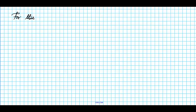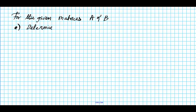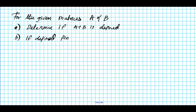The instructions for the examples are as follows: for given matrices A and B, first determine if A plus B is defined, and second, if the sum is defined, find A plus B.